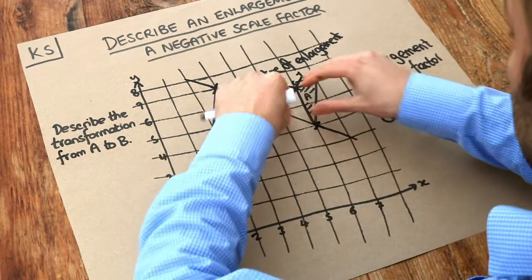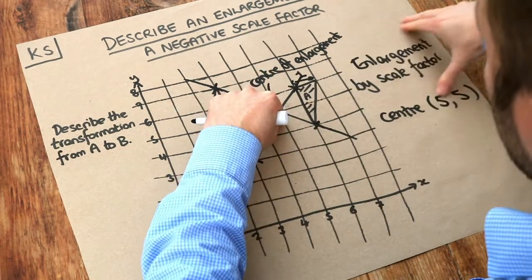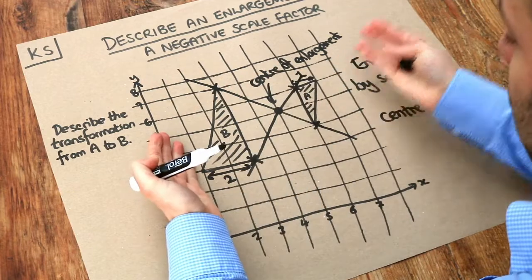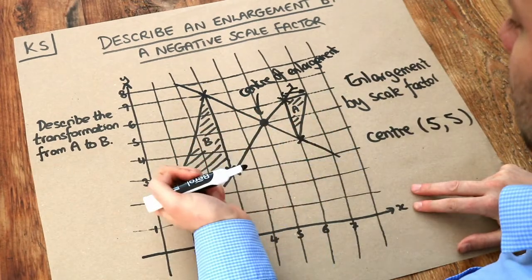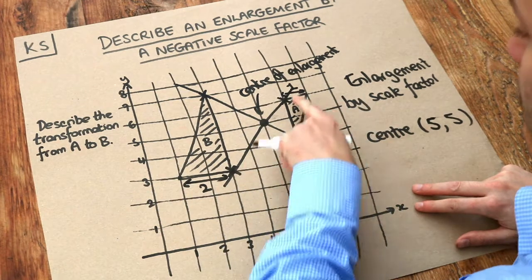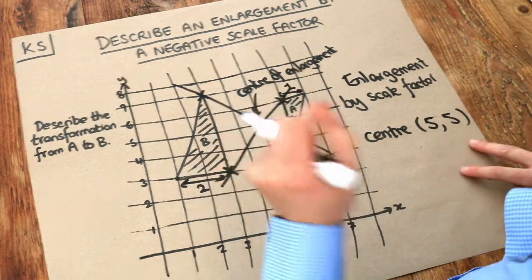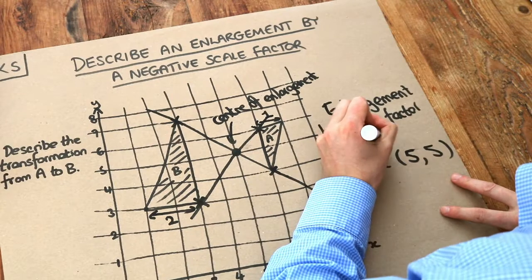But if the scale factor is 2 it would be enlarged out like this. But it's kind of flipping over, and whenever it flips over like that, then the scale factor is going to be a negative number. So rather than the scale factor of just 2, 1 to 2, we're going to give it a scale factor of minus 2.